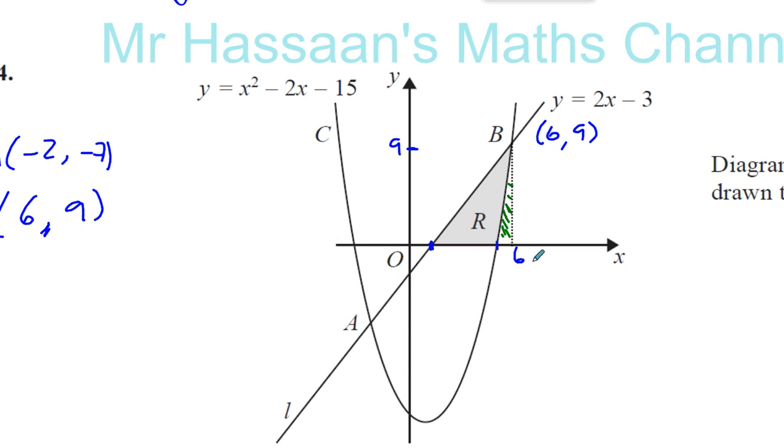First thing we need to ask ourselves, what is the area of this triangle? We need to find the coordinates of this point. Let me call this x₁ and let me call this x₂. I need to find the x-coordinates of these two points. So let's start with x₁. How can you find the coordinates of x₁? Well, x₁ is on the x-axis, and it's where this line cuts the x-axis. So it's basically the point when y = 0. When 2x - 3 = 0, that's how we're going to find where this coordinate of x₁ is. So you've got 2x = 3, so x = 3/2, which is 1.5. So I know that this is 1.5. That will help me find the area of the triangle now because I know the base is going to be 6 - 1.5, and the height is 9.